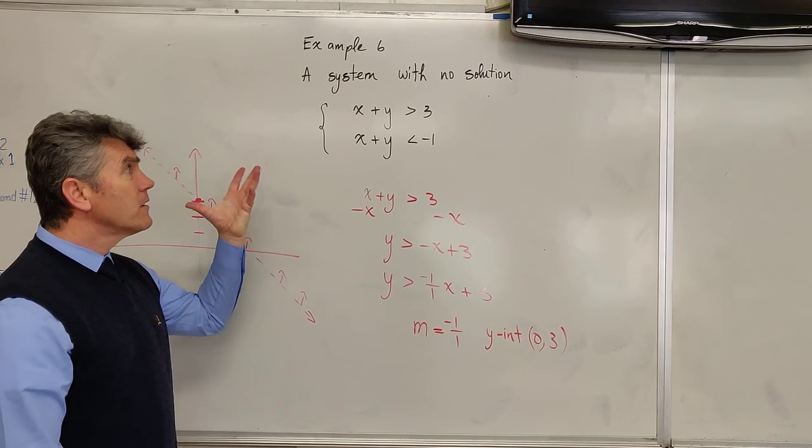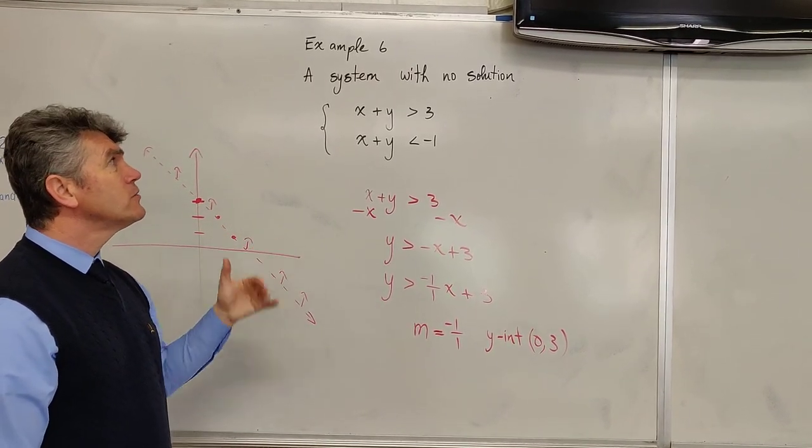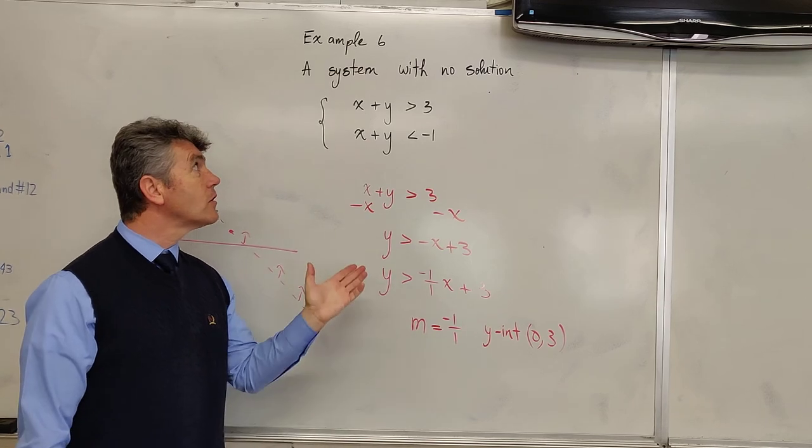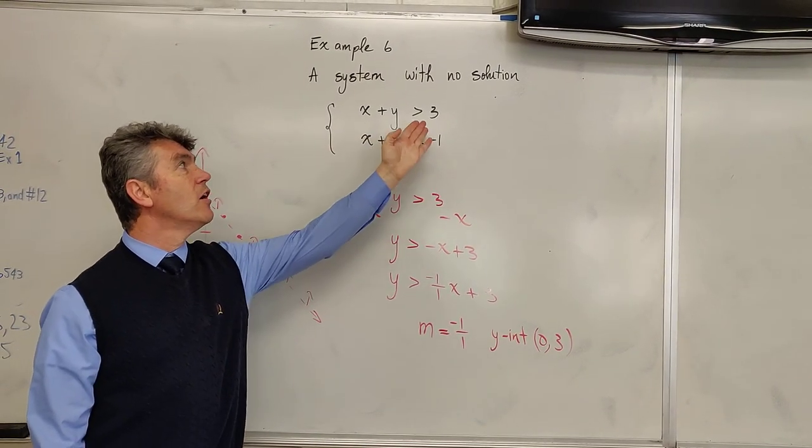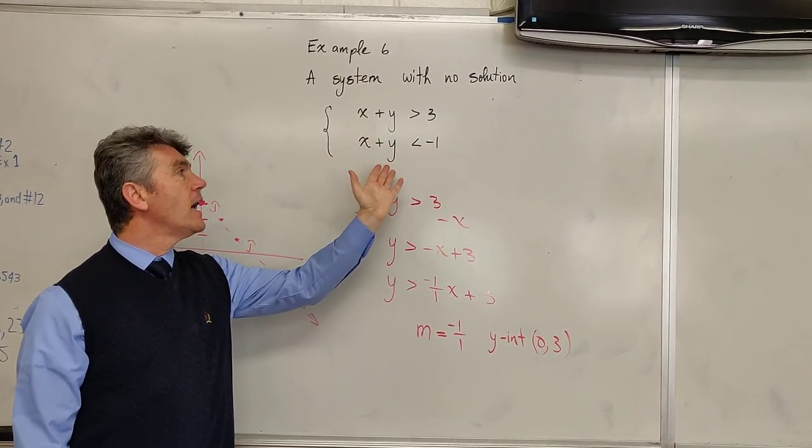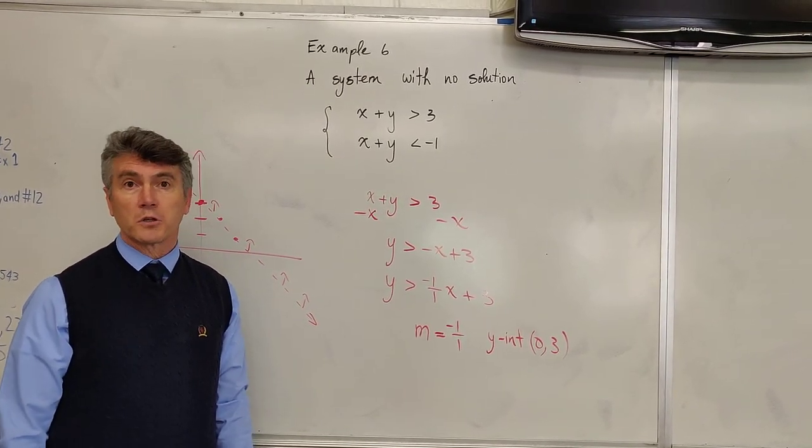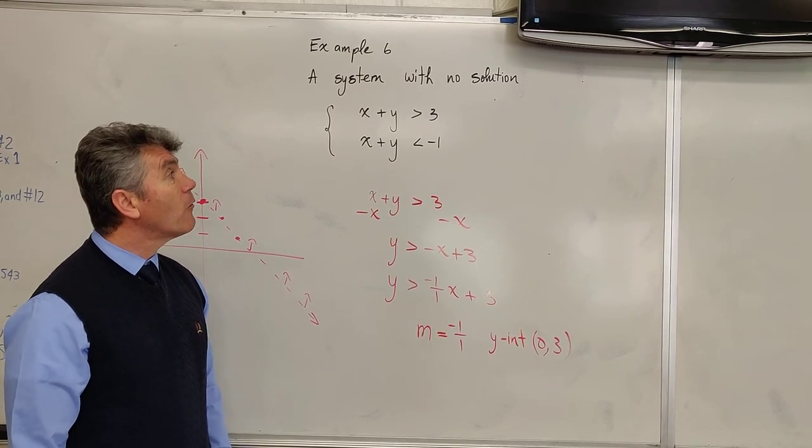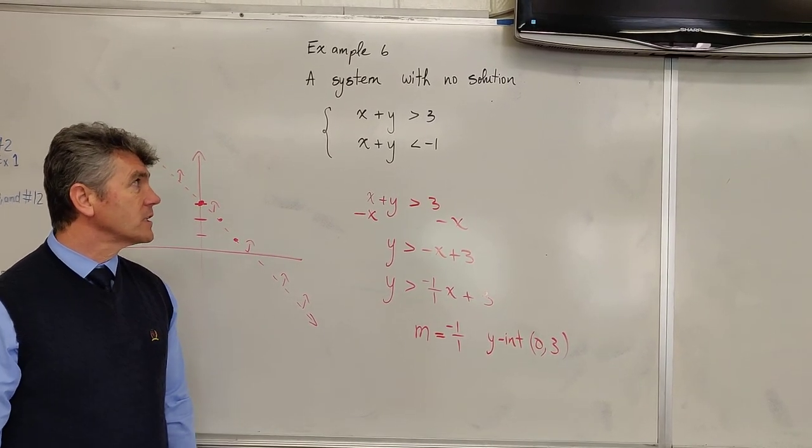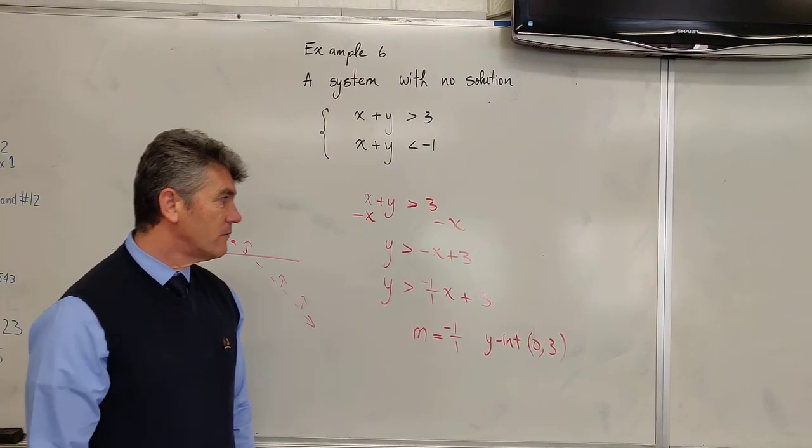You know, if you look carefully at this inequality, you should know right from the start that there is no solution. There is no way that x plus y can be both greater than 3 and less than negative 1. So when you do problems, read the problem carefully. Try to think about what you're doing before you actually start doing the problem.